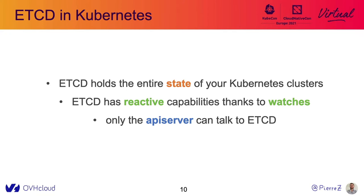The way etcd is built allows the Kubernetes ecosystem to be reactive, thanks to watches. And only the API server is capable of talking to etcd.